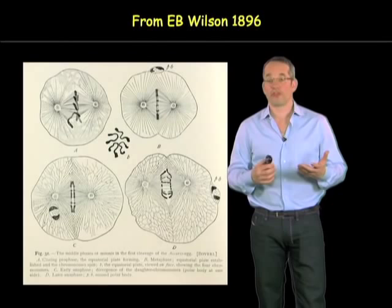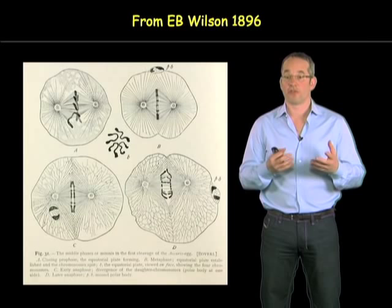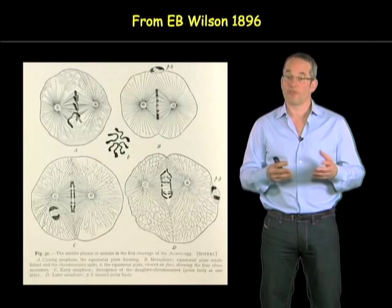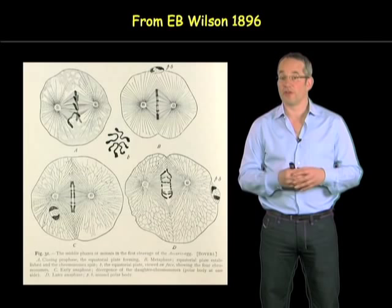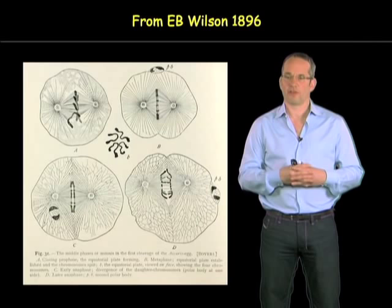This is a question that's interested biologists for more than 100 years. This is a picture from the work of Boveri, the great 19th-century German cytologist, from a book by E. B. Wilson called The Cell in Development and Heredity, where he summarized knowledge discovered around the turn of the 19th and 20th century. Boveri was also fascinated by this problem — where you could see that the spindle always has two poles, and how is this bipolarity set up?